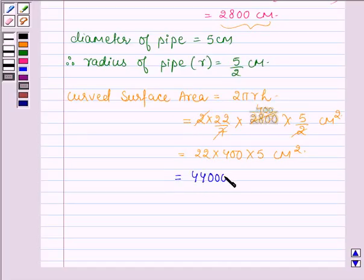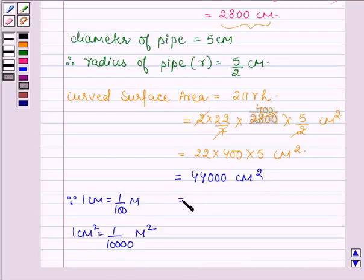This equals 44000 centimeters square. Since 1 centimeter square equals 1 upon 10,000 meters square, this gives 44 thousand divided by 10,000 meters square, which equals 4.4 meters square.